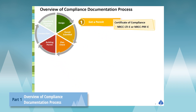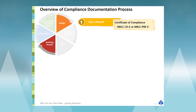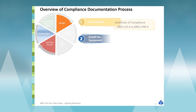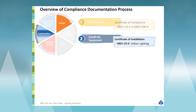As we're designing a project, we're determining what is going to meet the Energy Code, and documenting what we did to meet the Code with a Certificate of Compliance Form — which can be the NRCC or LMCC LTI form using the prescriptive approach, or the NRCC or LMCC performance calculation if the lighting was included in a conditioned area.